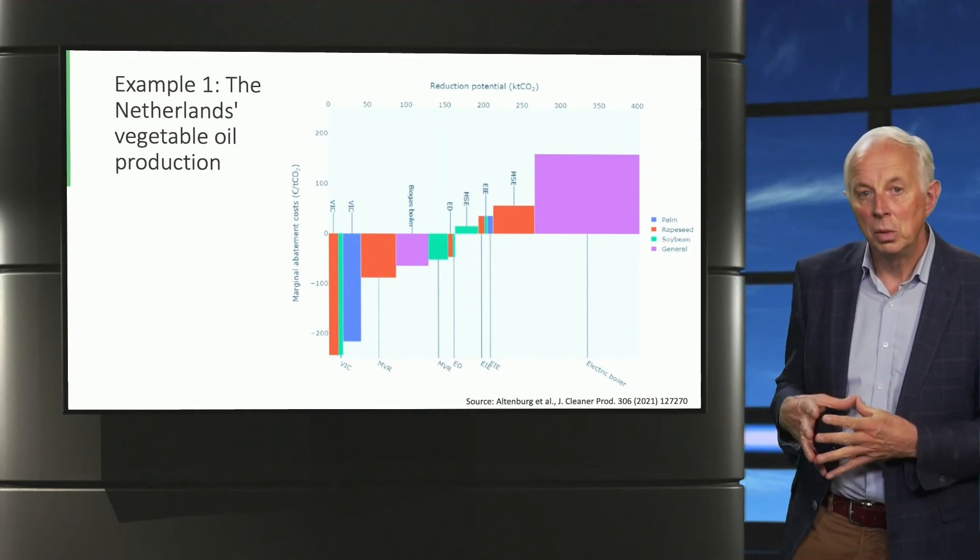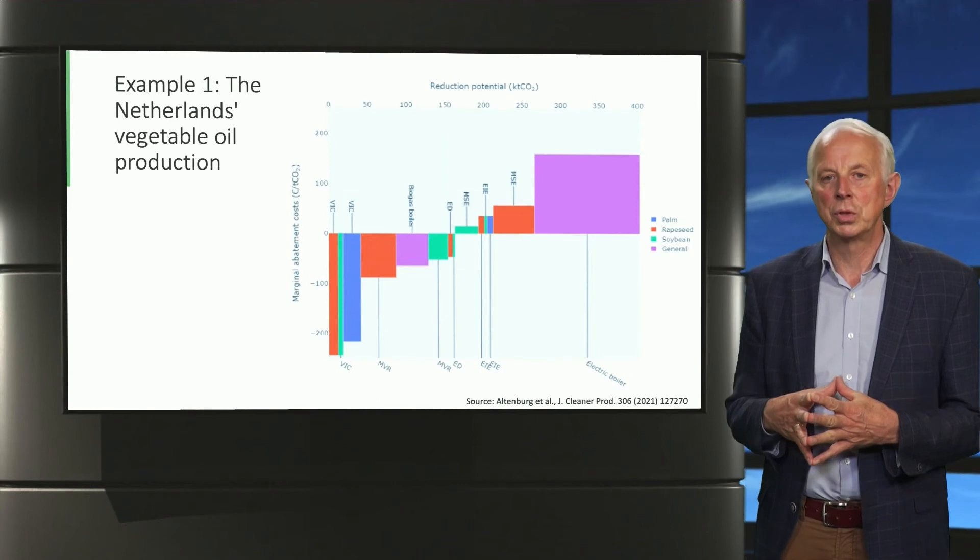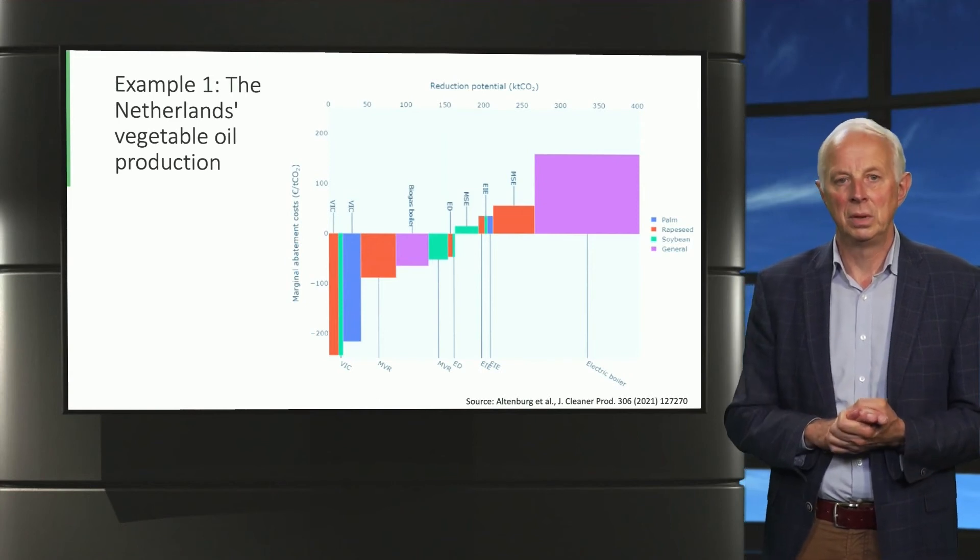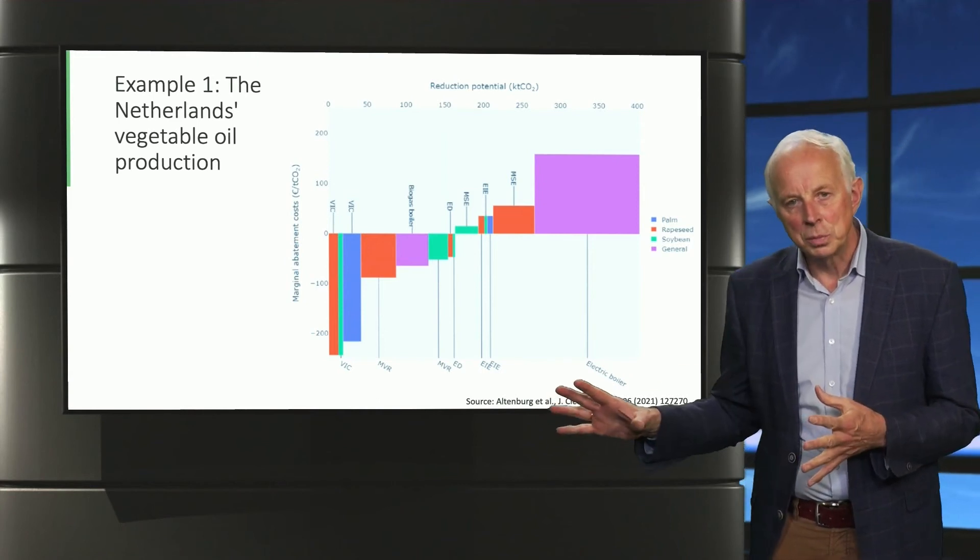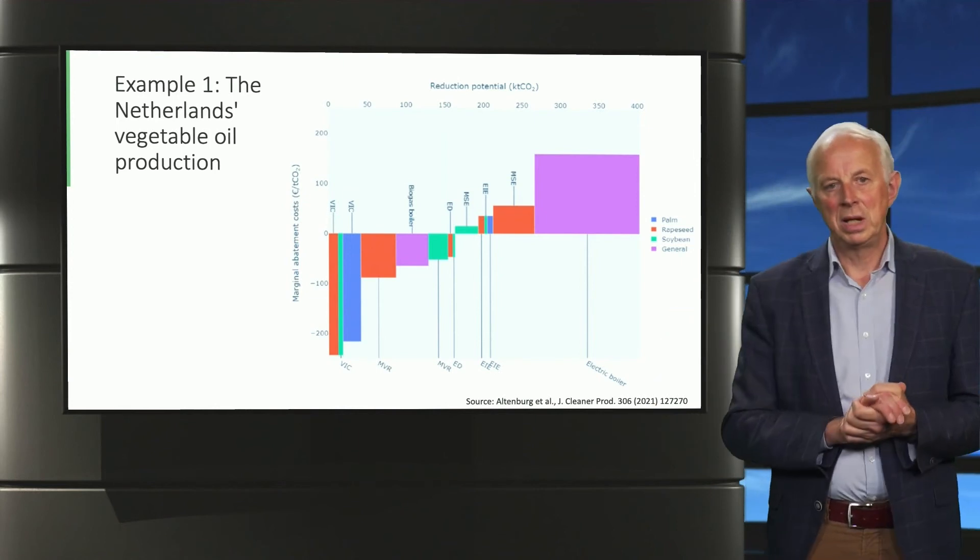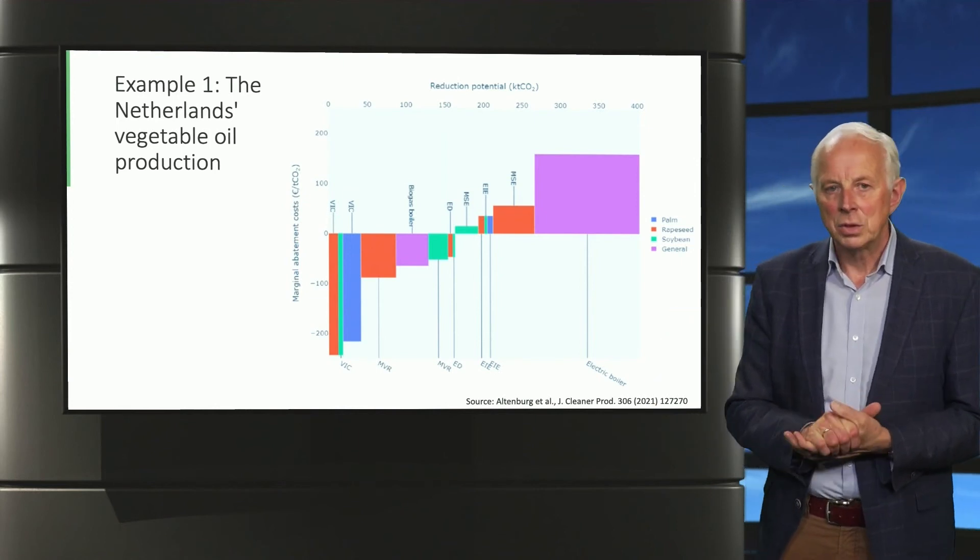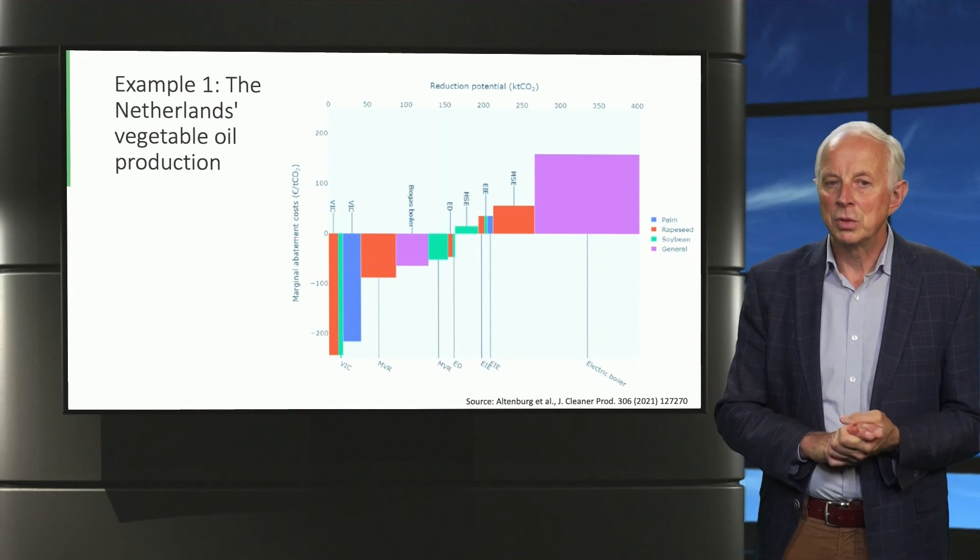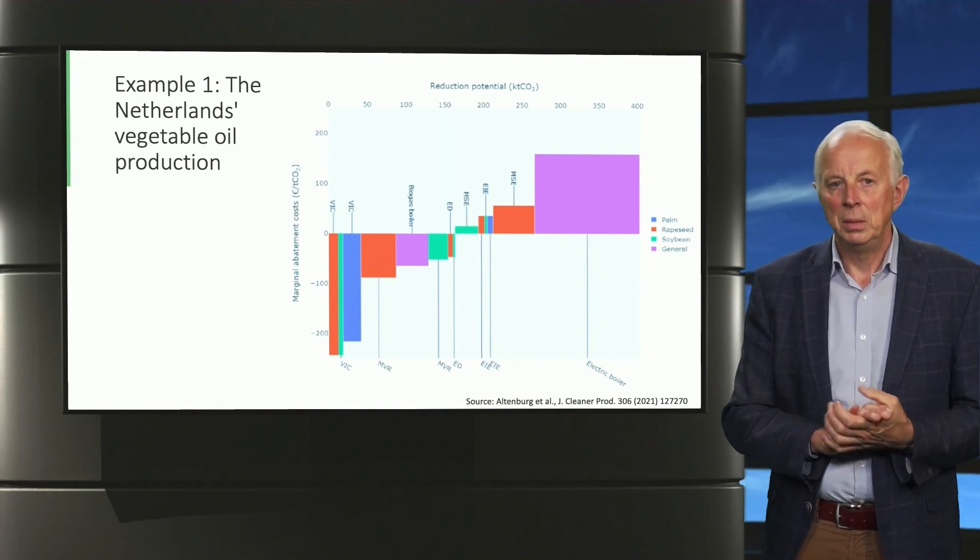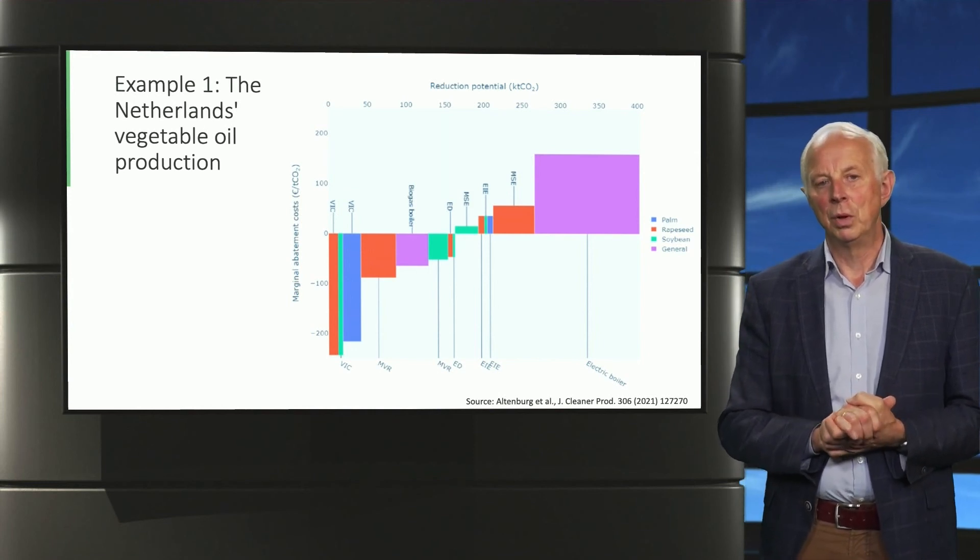So this is how a marginal abatement cost curve can look in real life. You see very low cost options, but also options that are very expensive. The highest cost intervention would have an associated cost of slightly more than 150 euro per avoided ton of CO2.